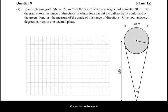Hi there. In this question we're told that Joan is playing golf. She is 150 metres from the centre of a circular green of diameter 30 metres. The diagram shows the range of directions in which Joan can hit the ball so that it could land on the green. Find α, the measure of the angle of this range of directions, and give your answer in degrees correct to one decimal place.